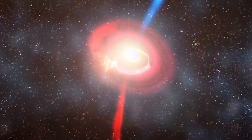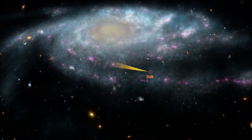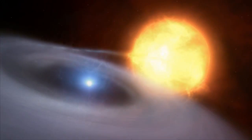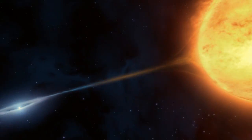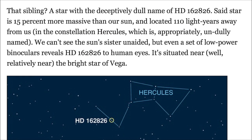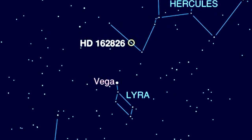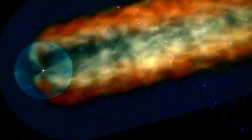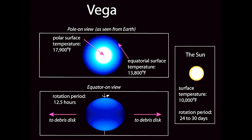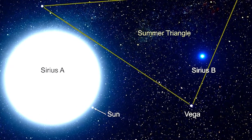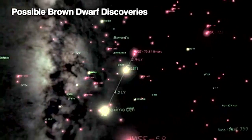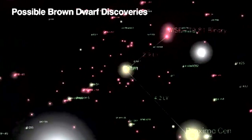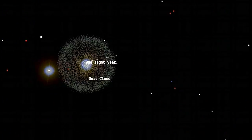That sibling, a star with the deceptively dull name of HD 162826. Said star is 15% more massive than our sun and located 110 light-years away from us in the constellation Hercules. We can't see the sun's sister unaided, but even a set of low-power binoculars reveals HD 162826. It's situated near, well relatively near, the bright star of Vega. Hey, remember this, what you've learned in one of your first Thor News classes: that our sun is traveling towards Vega. This is very important. Imagine if you were on our sister sun's Earth-like planet looking at us. What constellation will we be in?